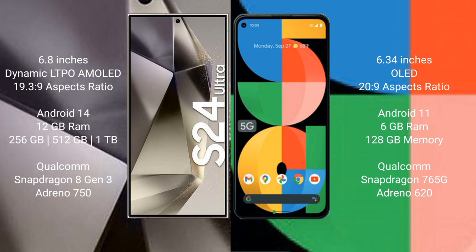The Samsung Galaxy S24 Ultra runs on Android 14, while the Google Pixel 5a runs on Android 11. The S24 Ultra comes with 12GB RAM and 256GB, 512GB, or 1TB internal storage with a Qualcomm Snapdragon 8 Gen 3 and GPU Adreno 750. The Pixel 5a comes with 6GB RAM and 128GB storage with a Qualcomm Snapdragon 765G processor and GPU Adreno 620.